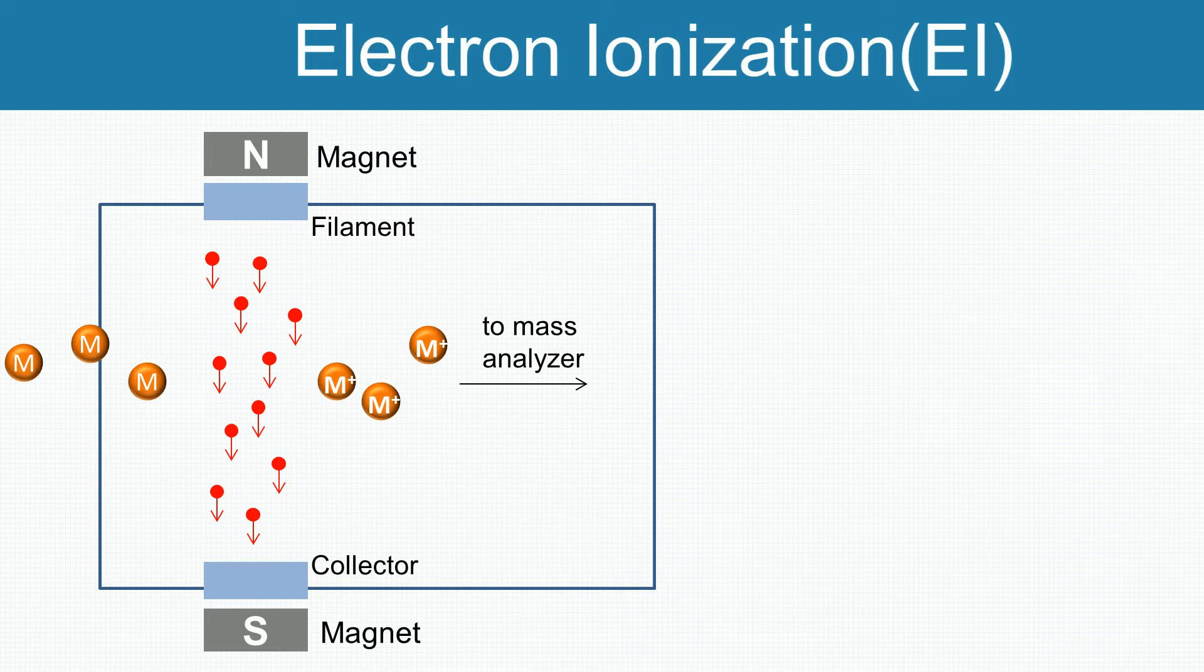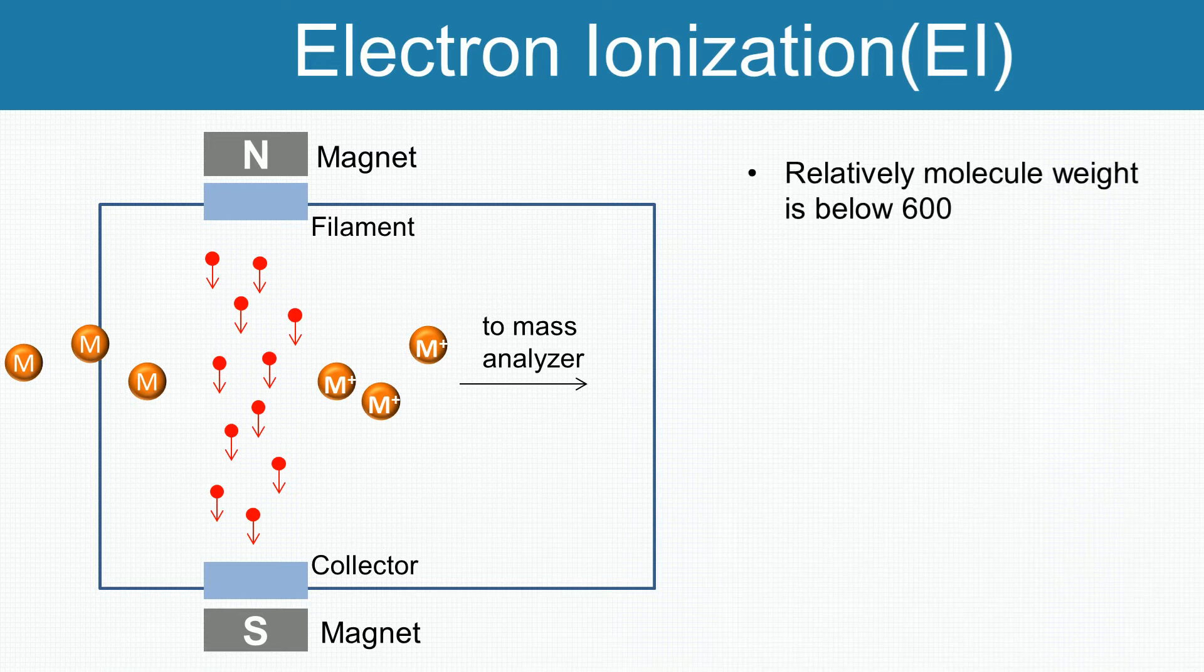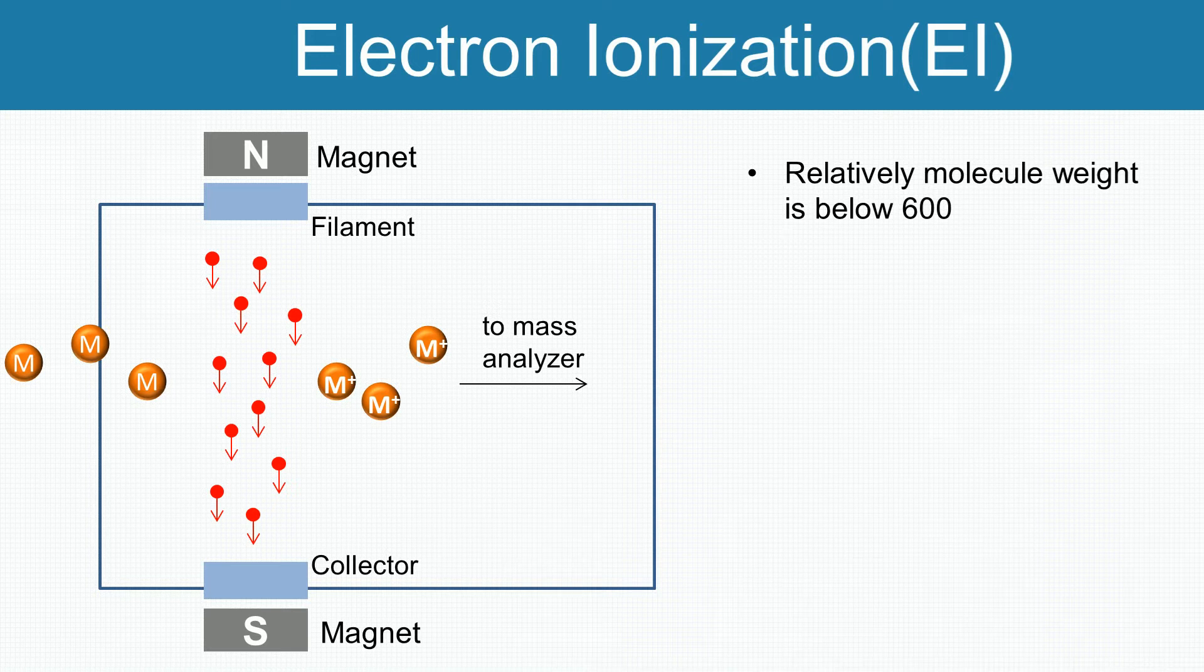Electron ionization is one of the first and popular ionization methods for mass spectrometry. It is appropriate for organic molecules whose relative molecular weight is below 600. In this technique, a current passes through a wire filament to produce electrons for ionization.